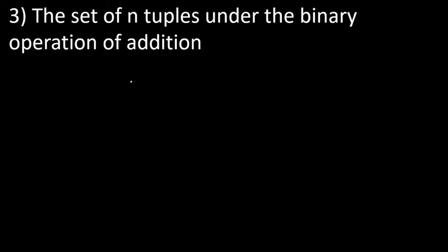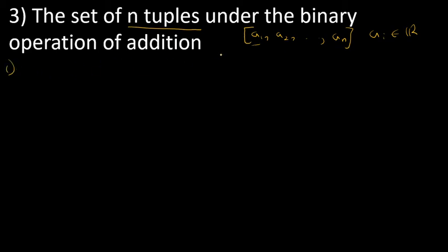The third example is the set of n-tuples under the binary operation of addition. An n-tuple represents an n-dimensional vector like (a1, a2, ..., an) where the ai's are real numbers. In this case the n-tuples are also associative because the operation is usual addition.